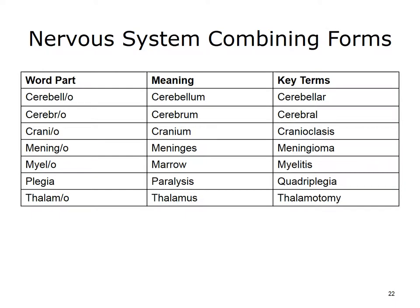Here are some additional keyword parts for the nervous system, along with their meanings. In the third column, you can see some of the medical terms that we can create by combining word parts. You should return to the online medical dictionary to hear the pronunciation and become familiar with the meaning of the created terms.